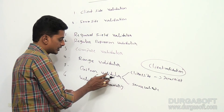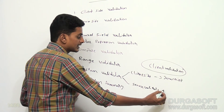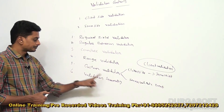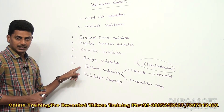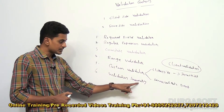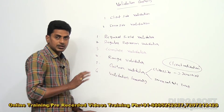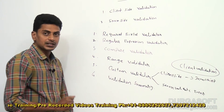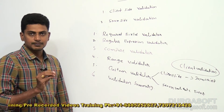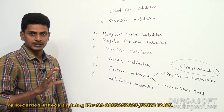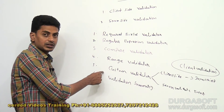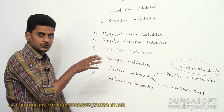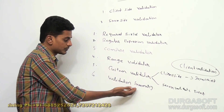Custom Validator is the only validation control which can perform both client side and server side validations. If you want to create your own validation control, we use Custom Validator. For client side validations, we have to write a JavaScript function, and call it in the Client Validation property. When the JavaScript function is called, based on what we have written, it will perform validations at client side. For server side validation, we raise the Server Validate event and write server side code in that event.